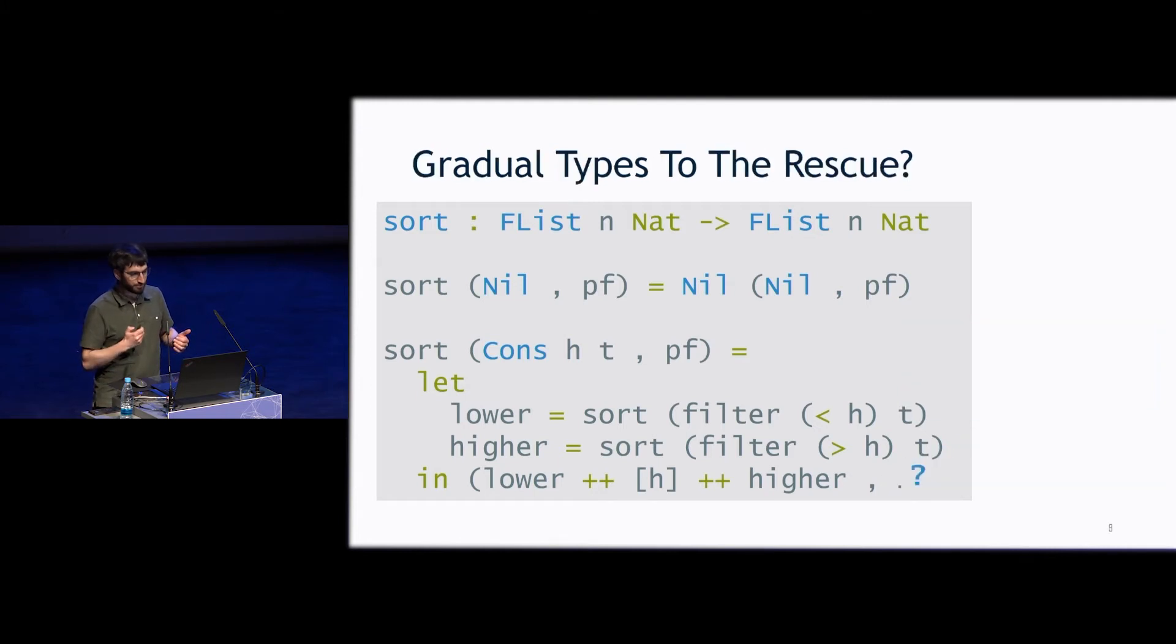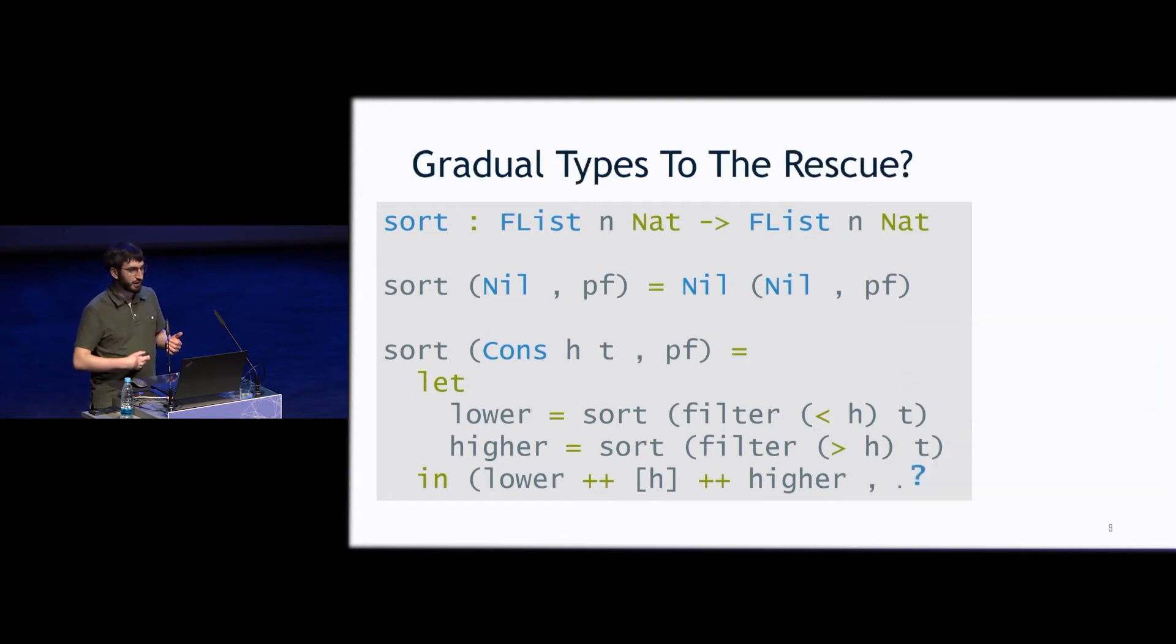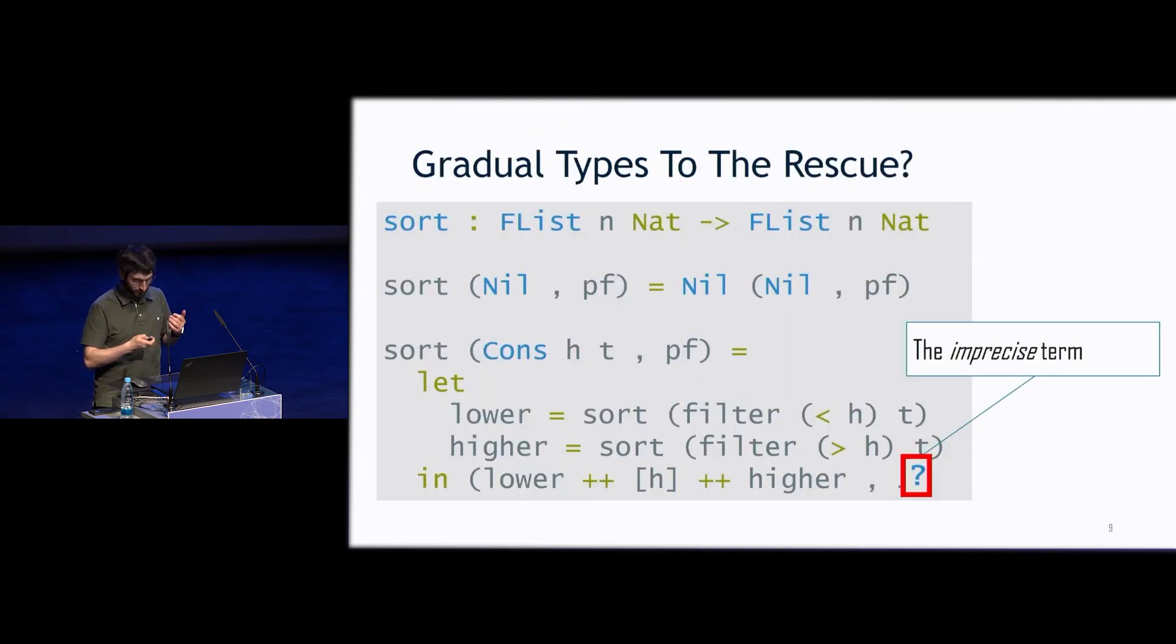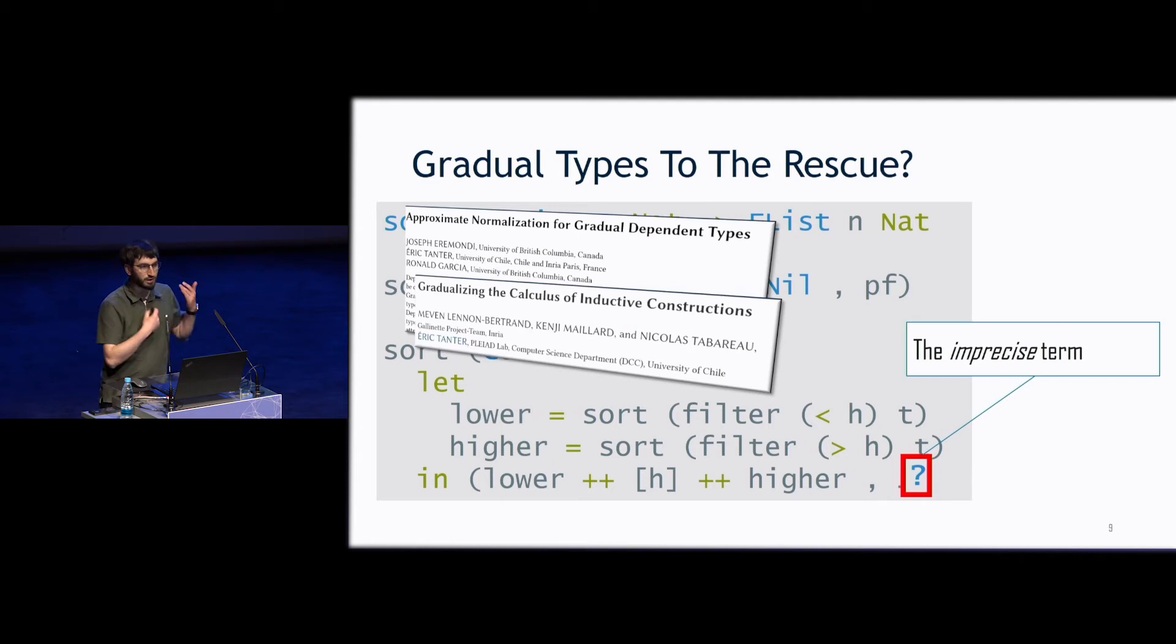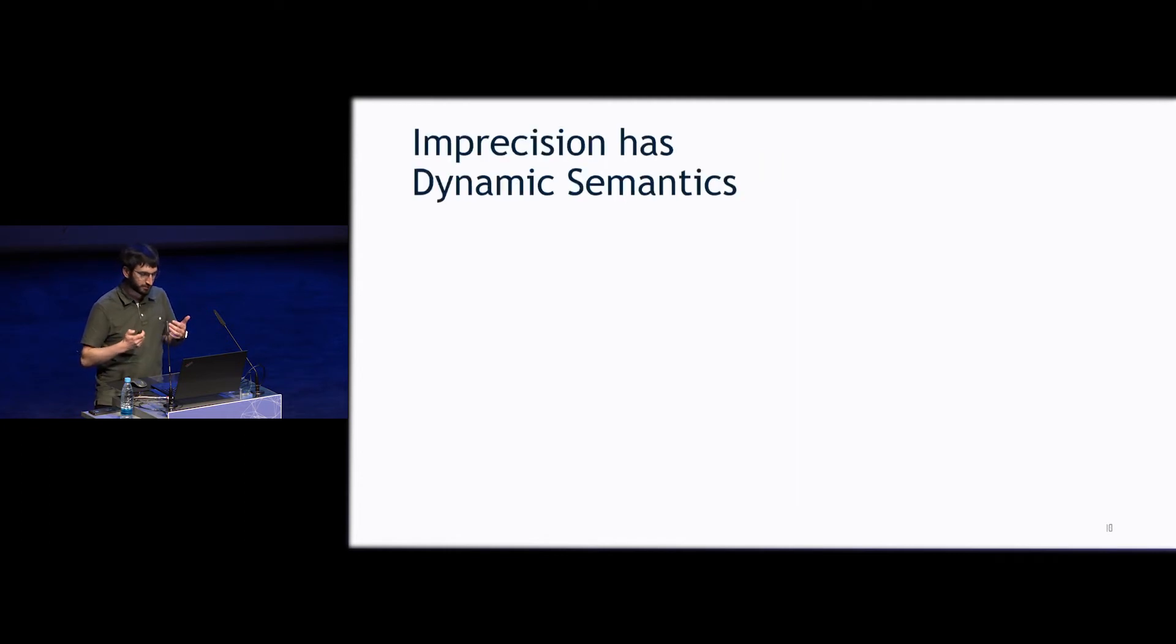So the alternative that we're proposing is to use the imprecise term from gradual dependent types. So that imprecise term, we write it as question mark. And so this has been established from a couple of existing works on gradual dependent types.